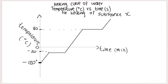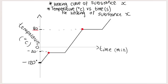The graph shown is the heating curve of substance X — not water — because the melting point shown is at negative 20 and the boiling point is at 80. We know the melting point of water is around 0 degrees Celsius, not negative 20, and the boiling point of water is around 100 degrees Celsius, not 80. That's why I changed it to substance X. The axis shows temperature versus time, and as time goes on, we are adding heat energy.